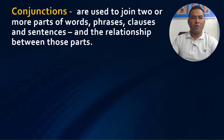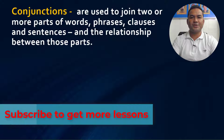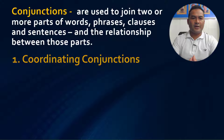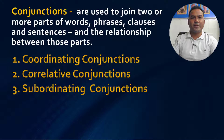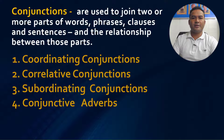Conjunctions are used to join two or more parts of words, phrases, clauses, and sentences, and to show the relationship between those parts. We use conjunctions to join words, phrases, clauses, and sentences, making sure that the ideas we join are related to each other. We have four kinds of conjunctions in English: coordinating conjunctions, correlative conjunctions, subordinating conjunctions, and conjunctive adverbs. We are going to study them one by one, starting with coordinating conjunctions.